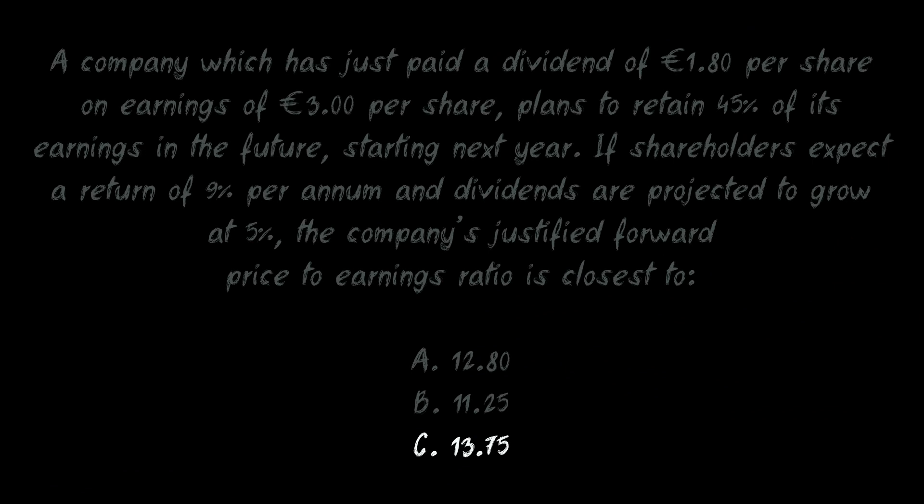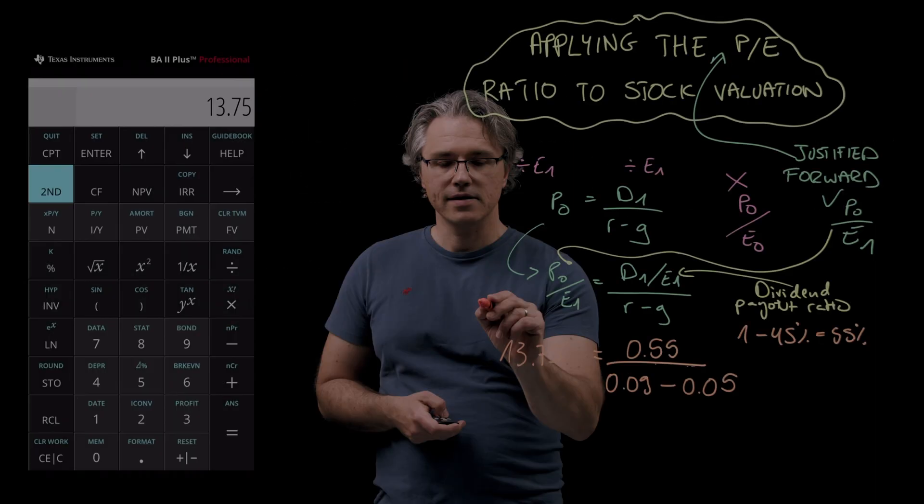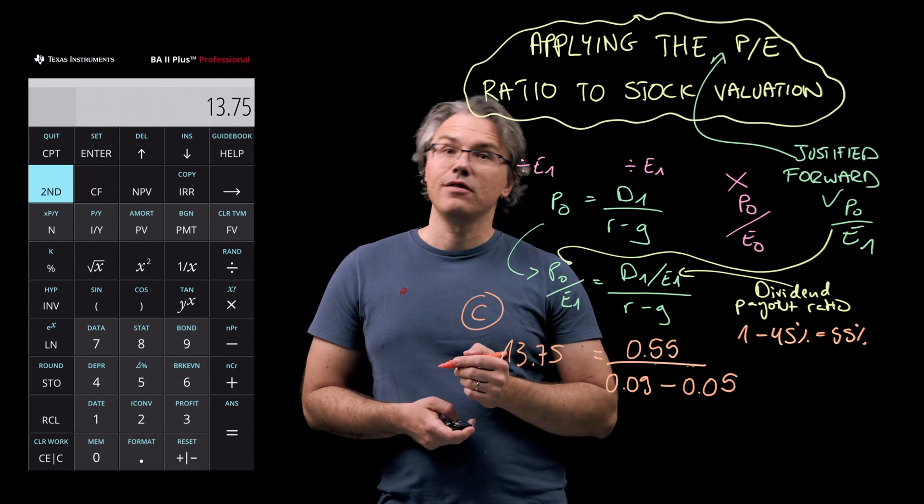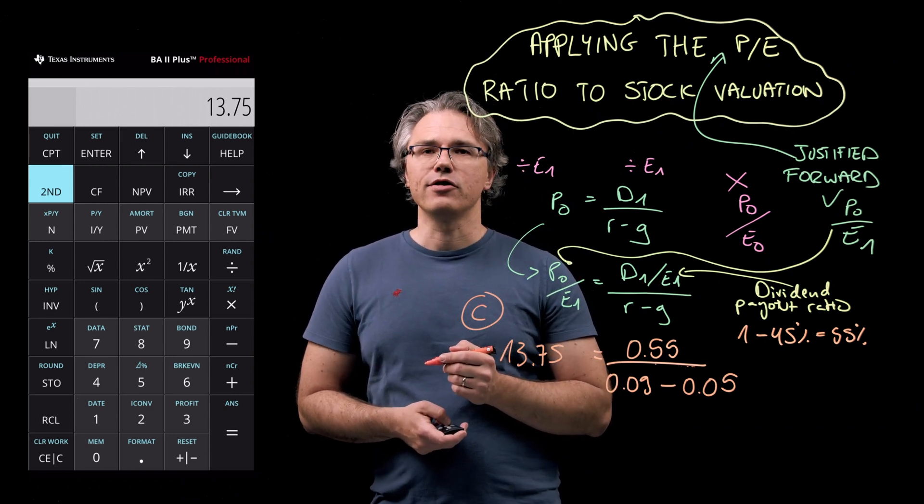which, if we check against the possible answers to this question, corresponds with solution C. And that is our justified forward P-E ratio.